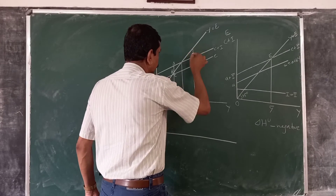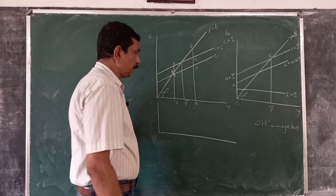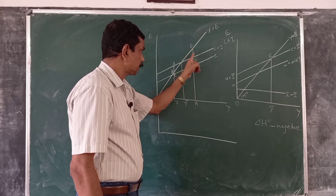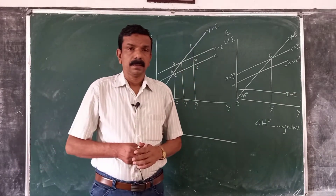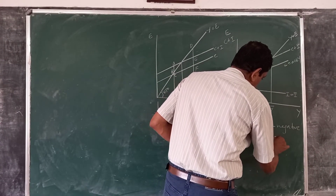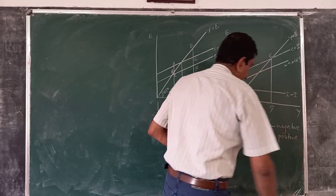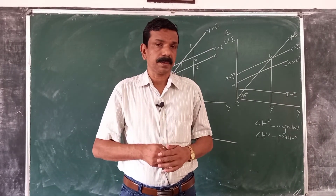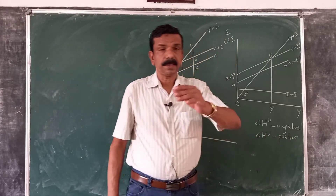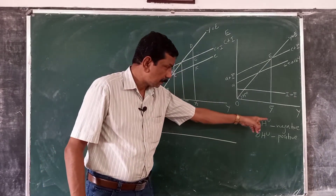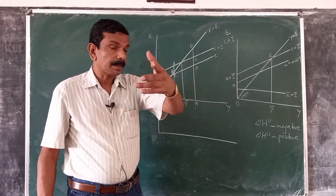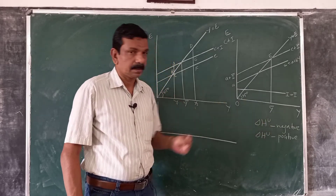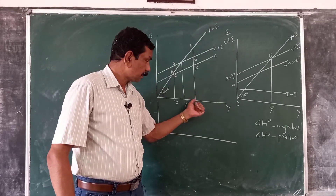Now consider income level Y2, higher than Y bar. At Y2, aggregate demand is given by eY2 and aggregate supply by dY2, so aggregate supply exceeds aggregate demand — delta H_u is positive, meaning undesired inventory accumulation takes place. Entrepreneurs and businessmen will therefore cut back production, and equilibrium returns to Y bar.